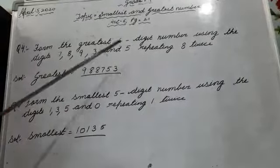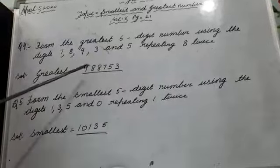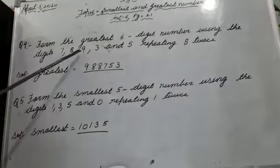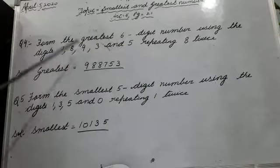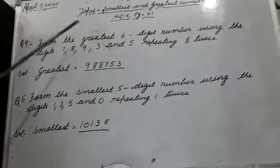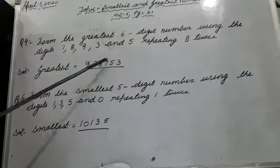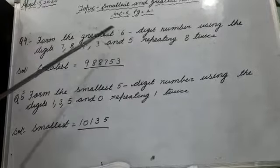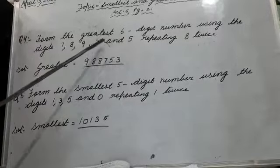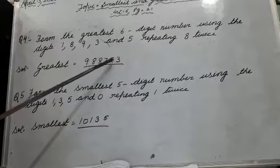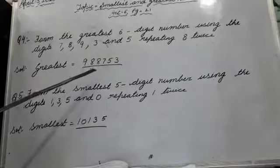Forming the greatest number: which is the greatest digit? 9. Write 9 first. Next is 8 — repeat 8 two times. Next one is 7. Write 7. Then 5. Write 5. Then last one is 3.